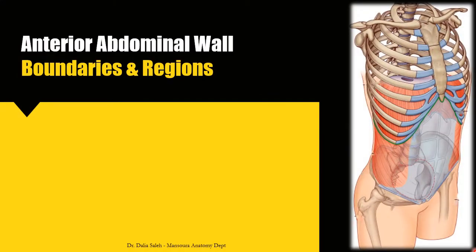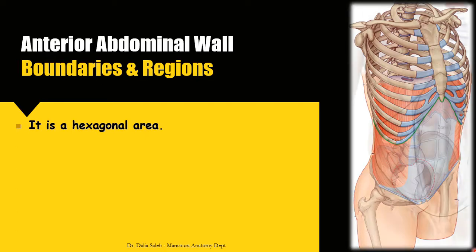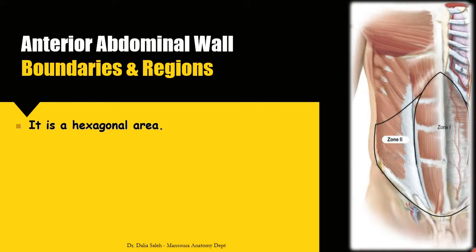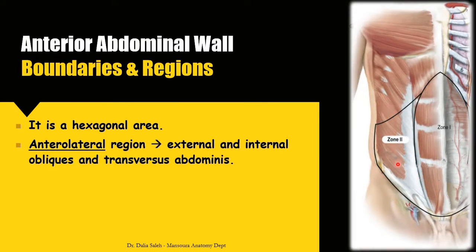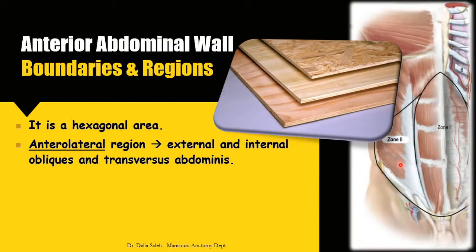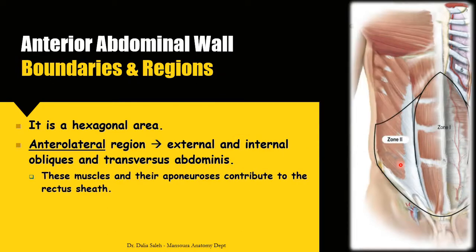The anterior abdominal wall is described as a hexagonal area, limited above by the xiphoid process and the costal margin, below by the inguinal ligaments and the pelvic bones, and on each side by the mid-axillary lines. We can divide it into two regions. The anterolateral region contains three flat muscles arranged one above the other in a plywood-like manner: from outside to inside, the external oblique, internal oblique, and transversus abdominis. The flat tendons of these muscles are called the aponeurosis, which contribute to the formation of the rectus sheath.